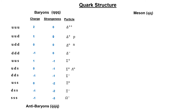Mesons have integer spin 0 or 1. This is only possible when they are made up of two quarks, because quarks have spin 1/2, so the total spin of two quarks is 0 or 1. Second, the baryon number of mesons is 0, which is only possible if one of the two is a quark and the other is an antiquark, so their total baryon number is 0. Therefore, any meson is a combination of a quark and an antiquark. A total of 9 configurations are possible from up, down, and strange quarks paired with an antiquark.